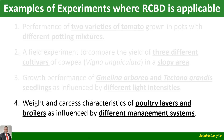The final example is a study involving weight and carcass characteristics of poultry layers and broilers. We want to compare broilers and layers as influenced by different management systems. In the experiment, some are under depletion, some are in cages, and so on. So we introduce blocks — the different management systems will constitute our blocks, while the two types of birds we are comparing will constitute our treatments.